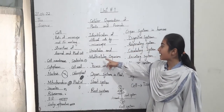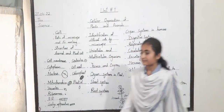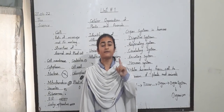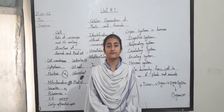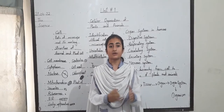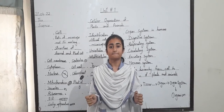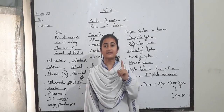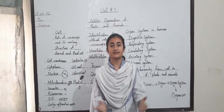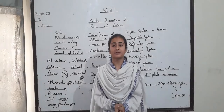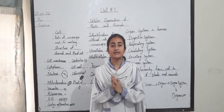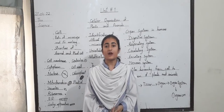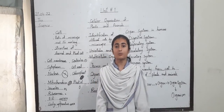Next is unicellular and multicellular organisms. Unicellular organisms are made up of one cell, and multicellular organisms are made up of multiple cells. Unicellular organisms, for example, are bacteria and amoeba. Multicellular organisms, for example, are humans.